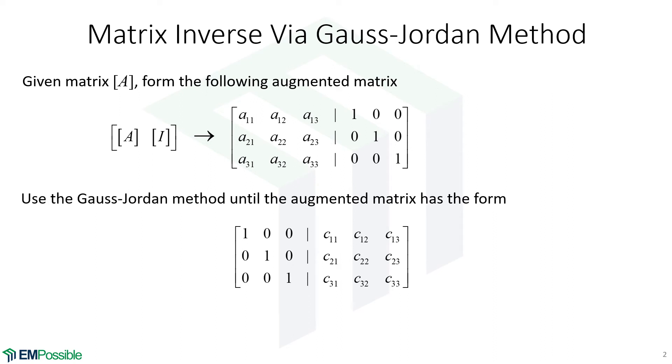We apply the Gauss-Jordan method until all of the elements on the left take on the form of the identity matrix. We're doing row operations, adding and subtracting integer combinations of other rows until we get the identity matrix on the left. Then what we're left with on the right is the matrix inverse.